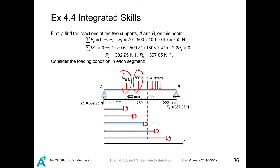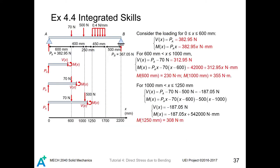Firstly, we find the reactions at the two supports A and B. By considering force and moment equilibrium, Ra equals 382.95 newtons and Rb equals 367.05 newtons. Next, we consider the loading condition in each segment — since there are concentrated loads and a distributed load, we divide the section into different segments to analyze the load condition. For x from 0 to 600 millimeters, the moment is given by Ra times x and the shear force is Ra.